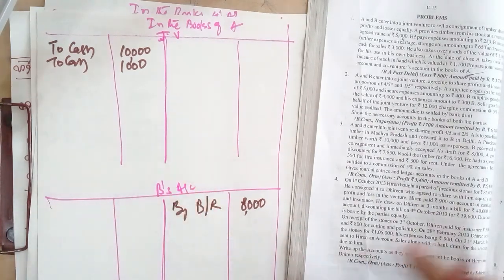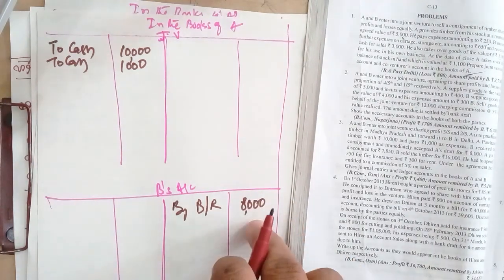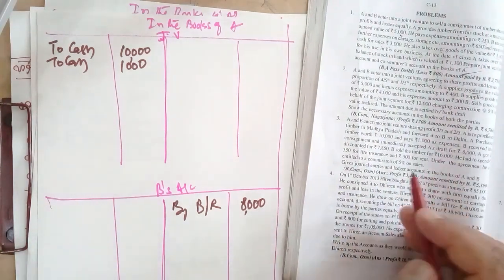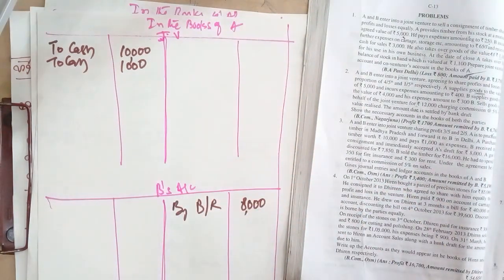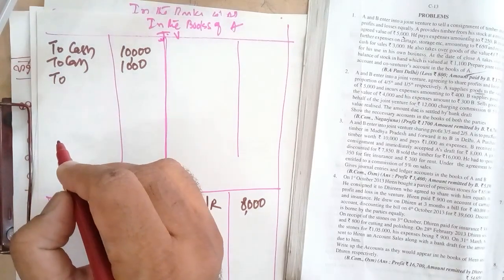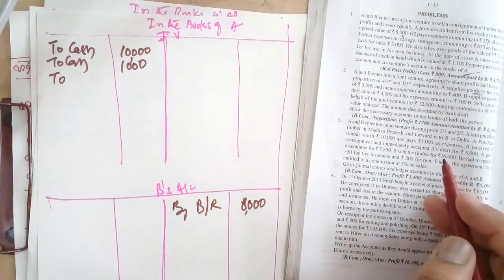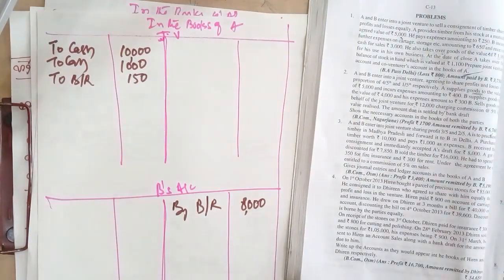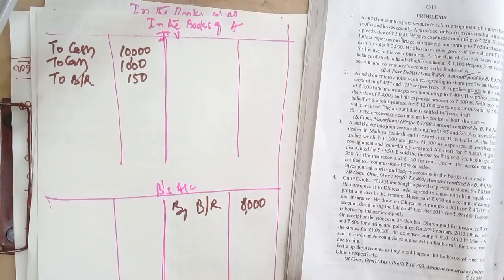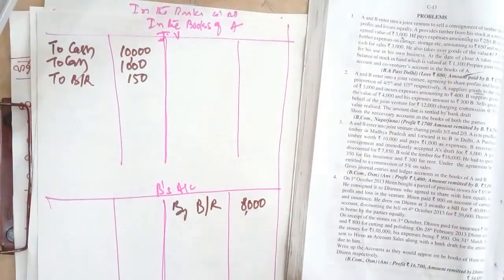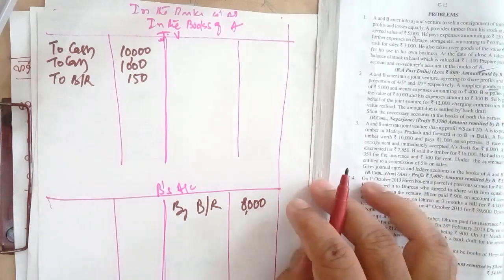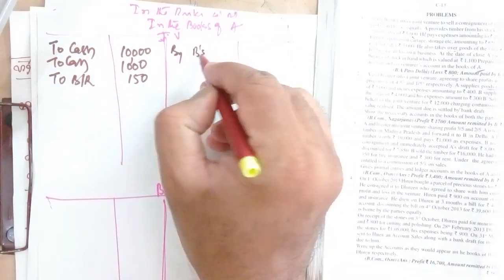The bill is discounted with the banker by A. We don't write the full amount but only the discounting charges as an expenditure to joint venture — that is 150, being the discount charges. The entry: bank account Dr; joint venture account Dr to bills receivable — the difference between the bill amount and amount received is 150. B sold the timber for 16,000, so: by B's account — 16,000; in B's account: to joint venture — 16,000.